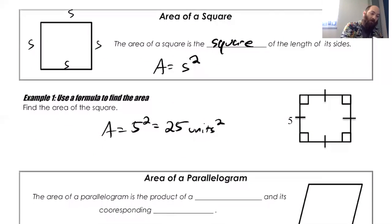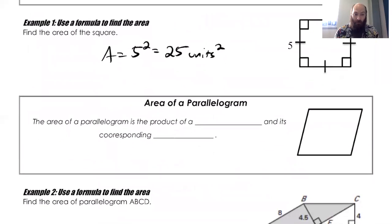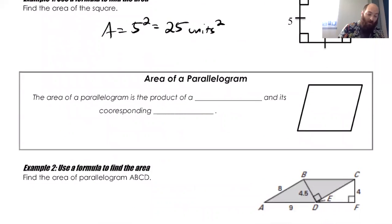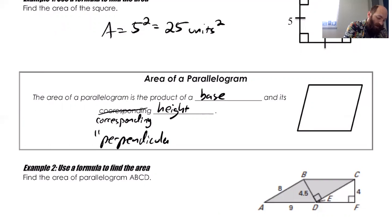We're not doing distance, we're doing area of the shape. How much two-dimensional space does this take up here? So it's 25 square units. And that's what I mean, square centimeters, square inches, things like that. Alright, next one, area of a parallelogram. The area of a parallelogram is a product of a base and its corresponding height.